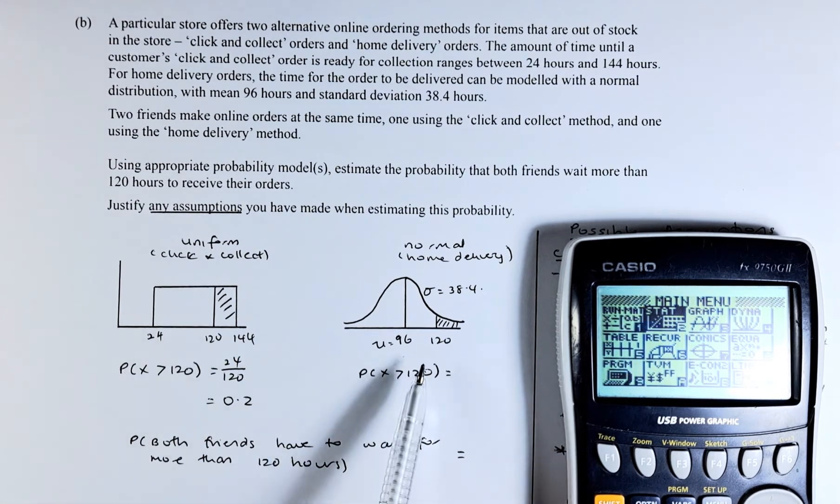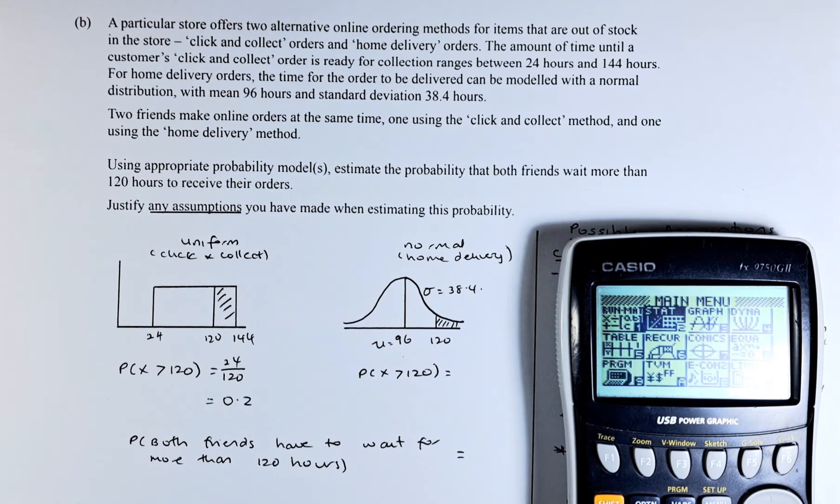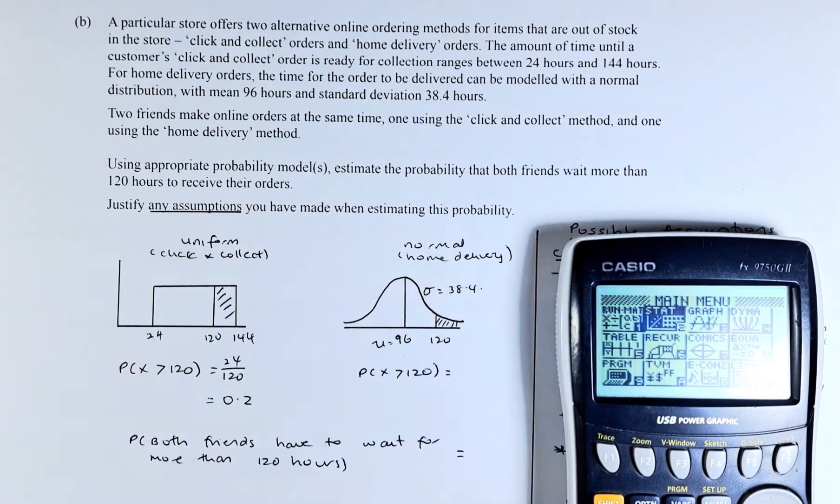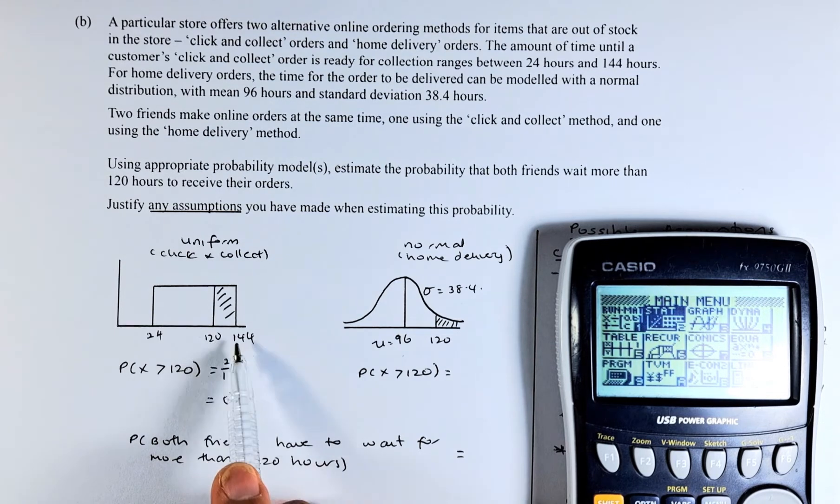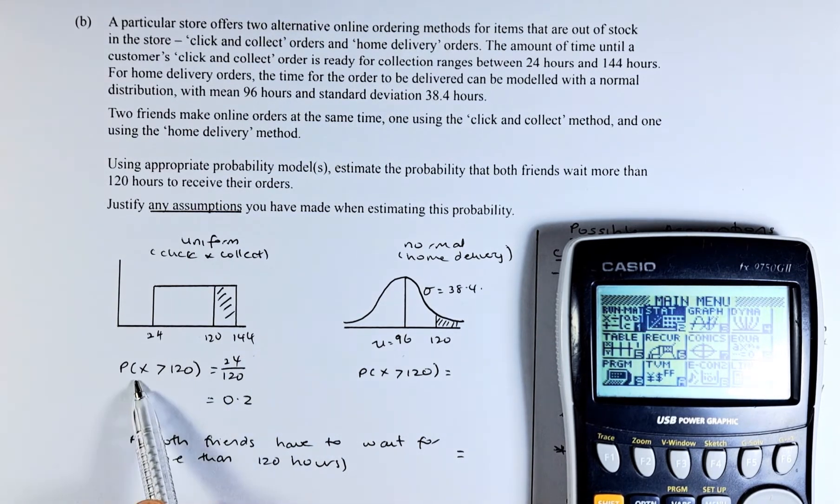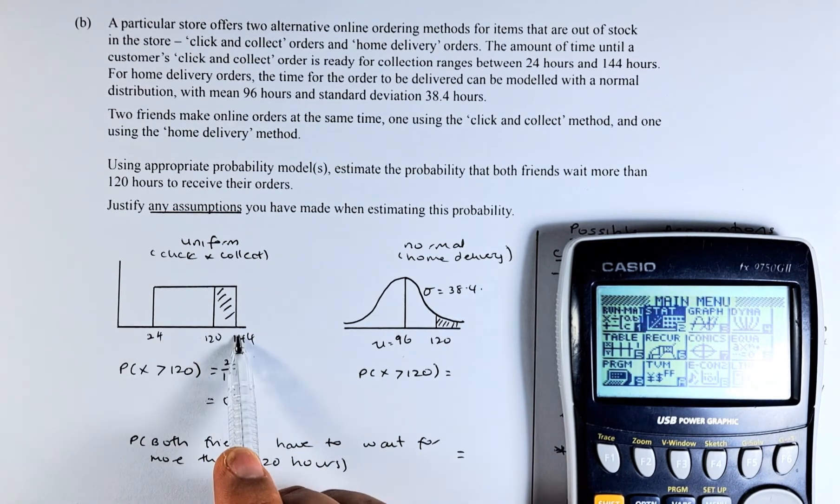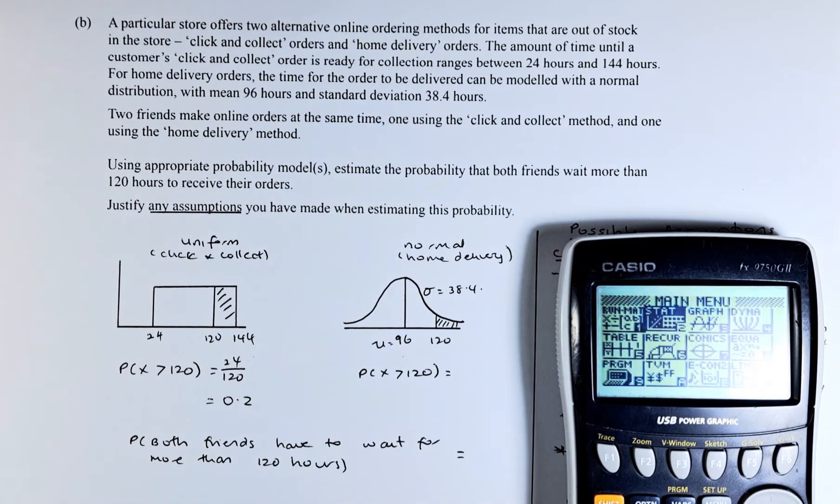Using appropriate probability models, estimate the probability that both friends wait more than 120 hours to receive their orders. So from 24 to 144 is actually 120 hours, and they ask you to calculate the probability that's more than 120. From 120 to 144 is 24, so the probability of more than 120 is going to be this area here, which is 24 divided by 120, and the probability is 0.2.